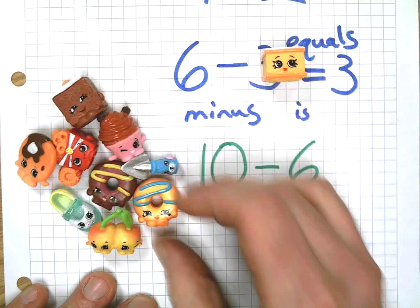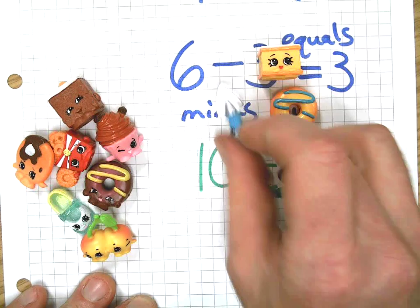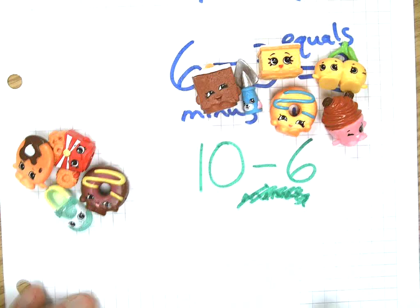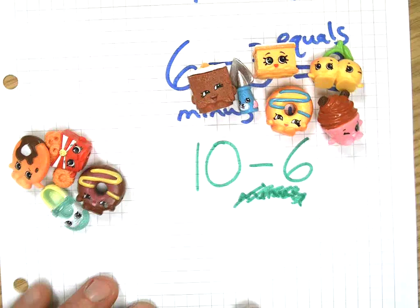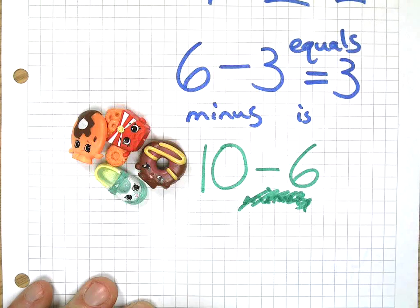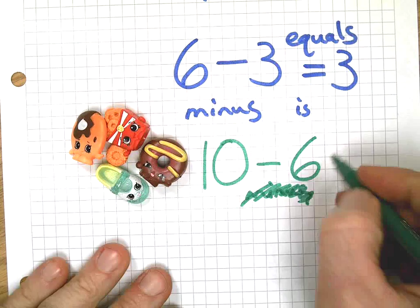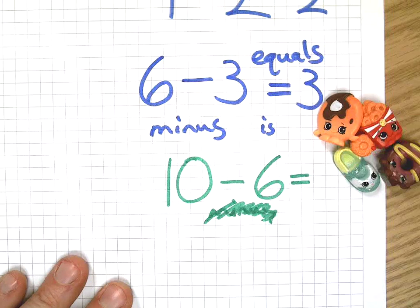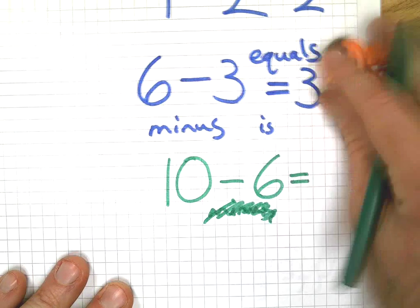One, two, three, four, five, six. And you know what we say to those guys? Bye-bye, off you go! And what does that equal? What do I have left? Four.